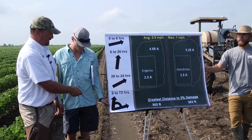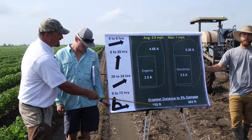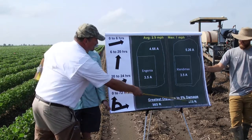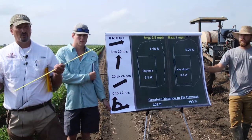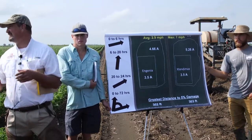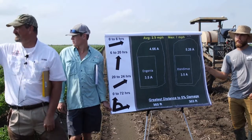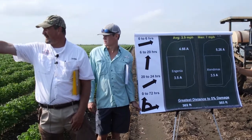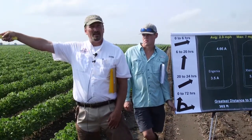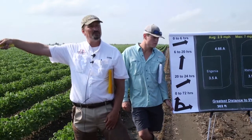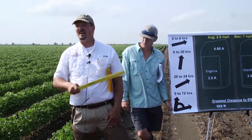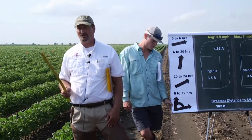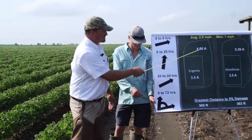At 12 days, Ingenia moved 310 feet and Extendamax moved 303 feet. The current label says a buffer of 110 feet — Arkansas had a quarter mile downwind buffer. That white flag directly behind you is at 110 feet. We had damage well beyond 110 feet. Based on the label, there would not be a buffer on the other three sides of the field.